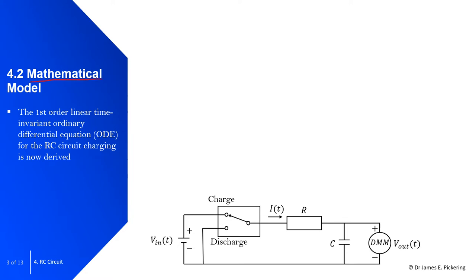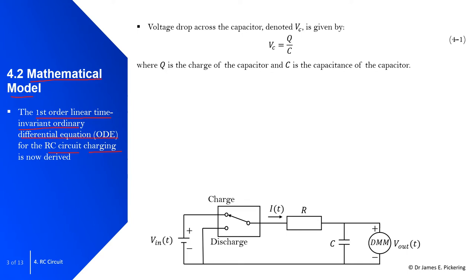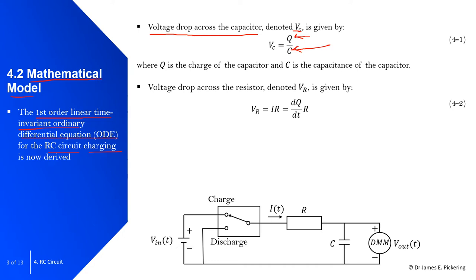Focusing on the mathematical model, we're going to derive a first order linear time invariant ordinary differential equation for the RC circuit, initially for charging. We start with some general equations: the voltage drop across the capacitor, denoted V_C, is equal to the charge Q over C (the capacitance). The voltage drop across the resistor, applying Ohm's law, is equal to I multiplied by R, where I (the current) is the rate of change of charge with respect to time.